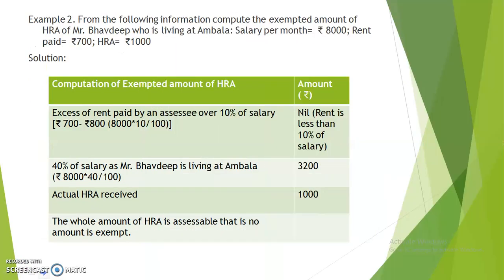We will take the second example. From the following information, compute the exempted amount of HRA of Mr. Bhavdeep who is living at Ambala. Salary per month is Rs. 8,000, rent paid by him is Rs. 700, and actual HRA is Rs. 1,000. Applying the same conditions: excess of rent paid by Mr. Bhavdeep over 10% of salary — rent paid is Rs. 700 but 10% of salary is Rs. 800, so the difference is negative. We will take nil.